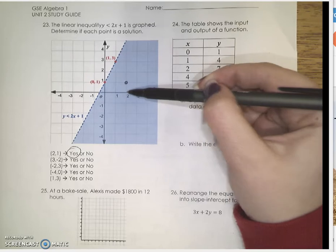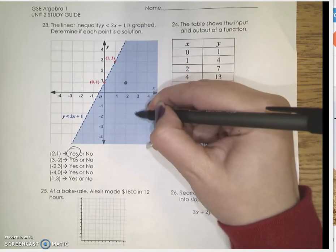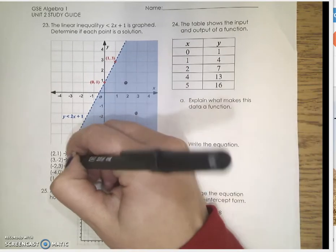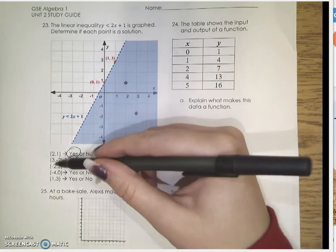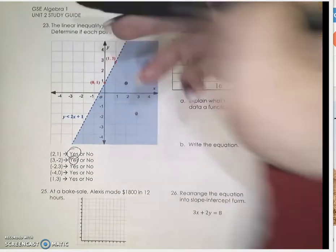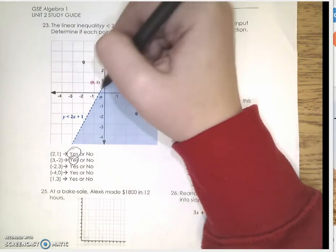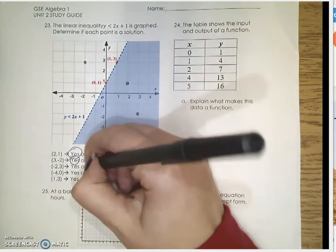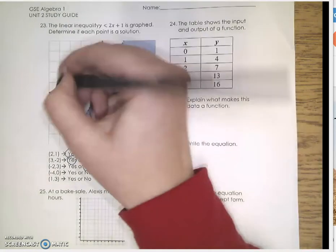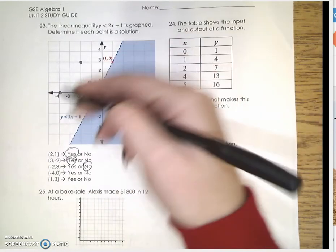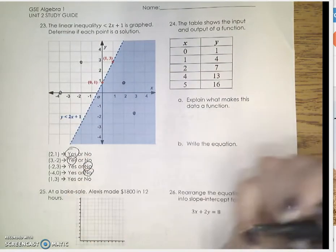3, negative 2, I go over 3, down 2. Again, we are in the shaded area, so again that is a solution to this inequality. Negative 2, 3 is up here. It is not in the shaded area, so this is not a solution. Negative 4, 0, so over negative 4, up 0. Once again, not in the shaded area, so it is not a solution.